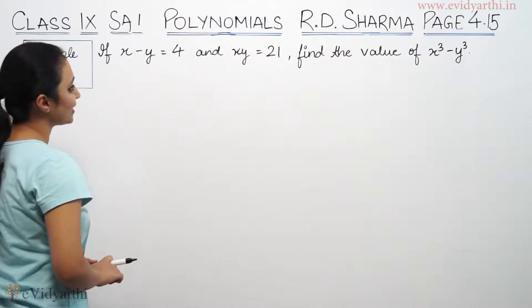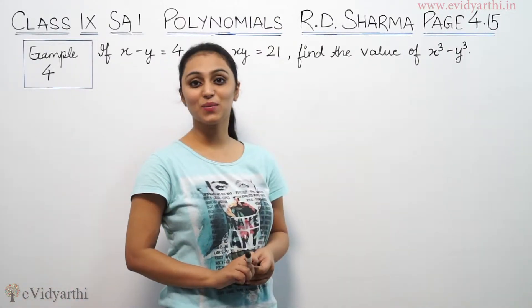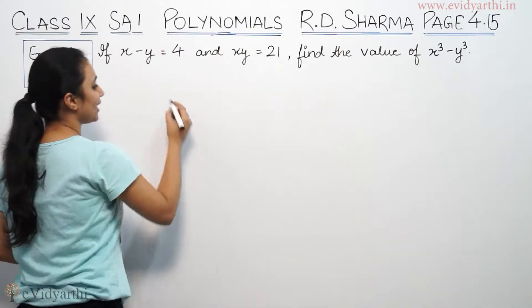This says if x minus y is 4 and xy is 21, find the value of x cube minus y cube. So we have to find x cube minus y cube value.